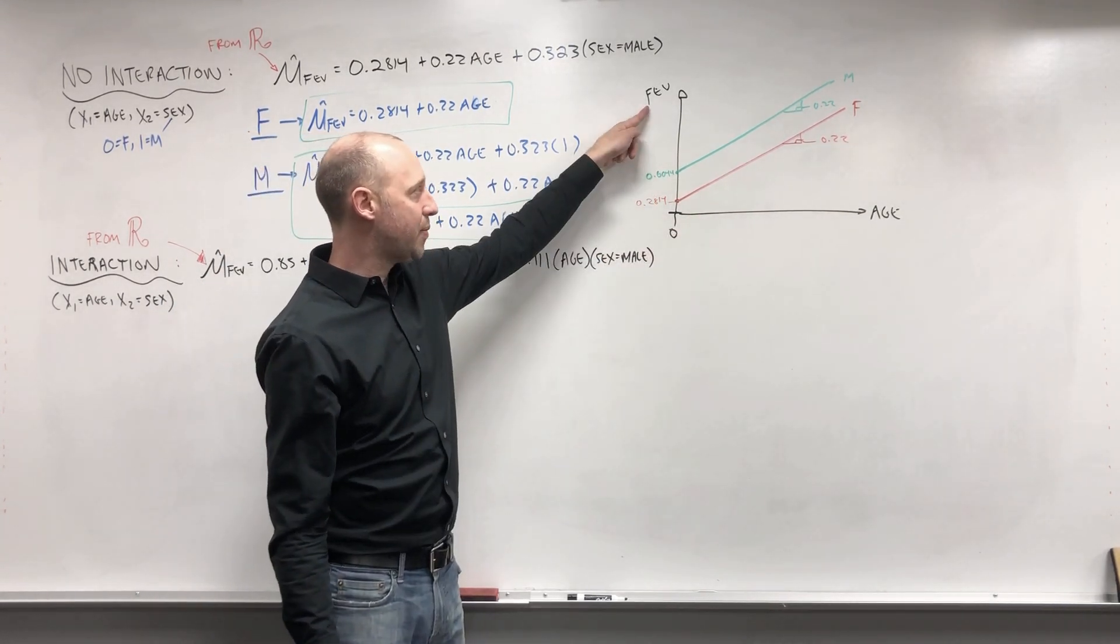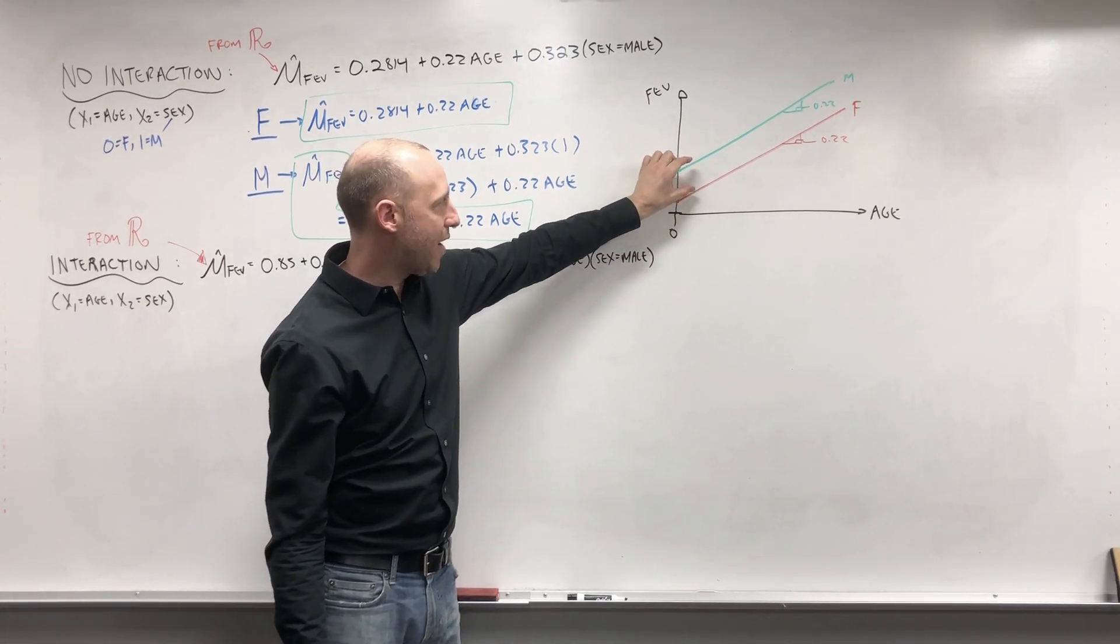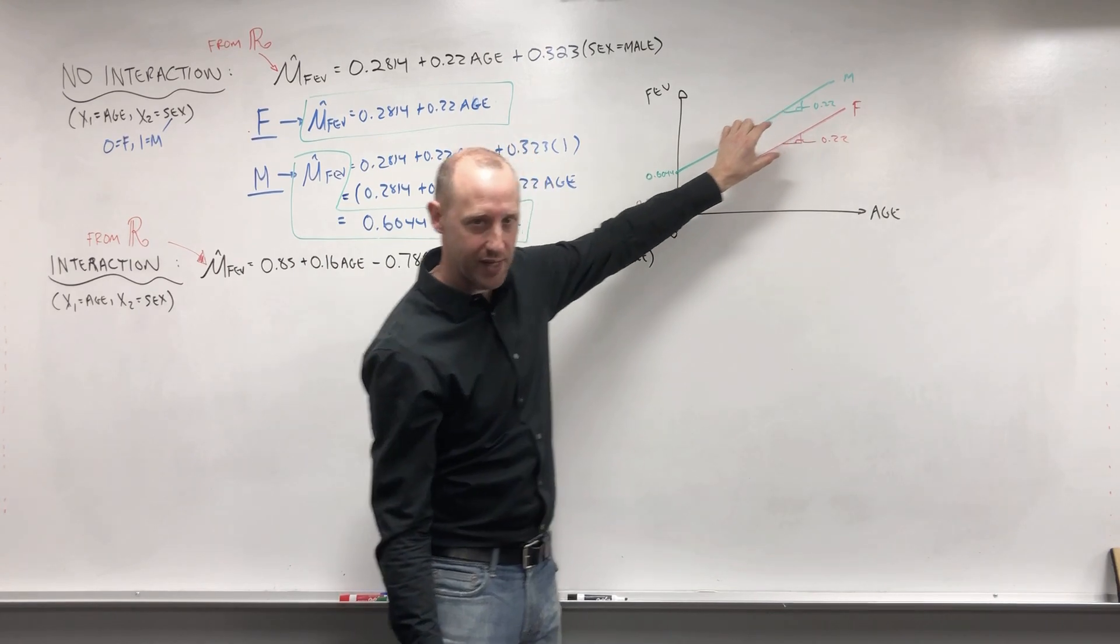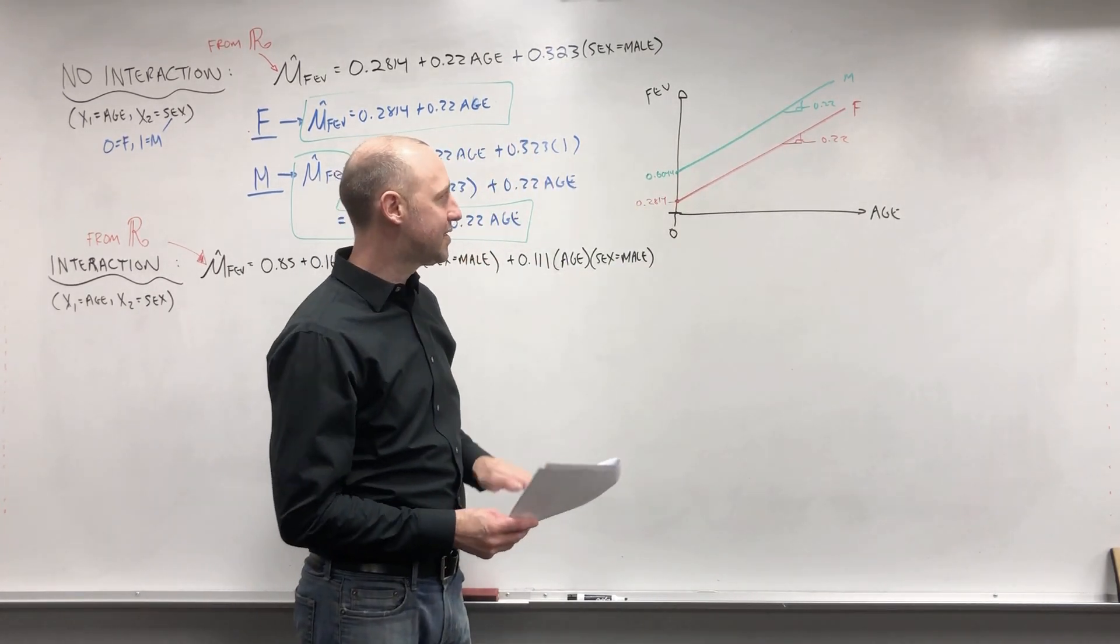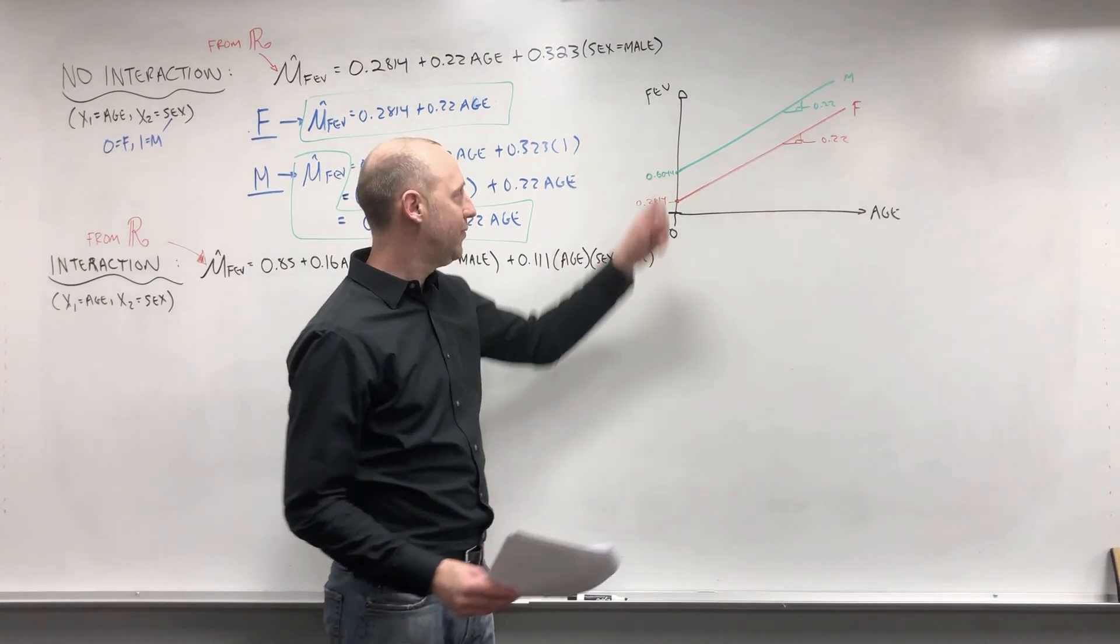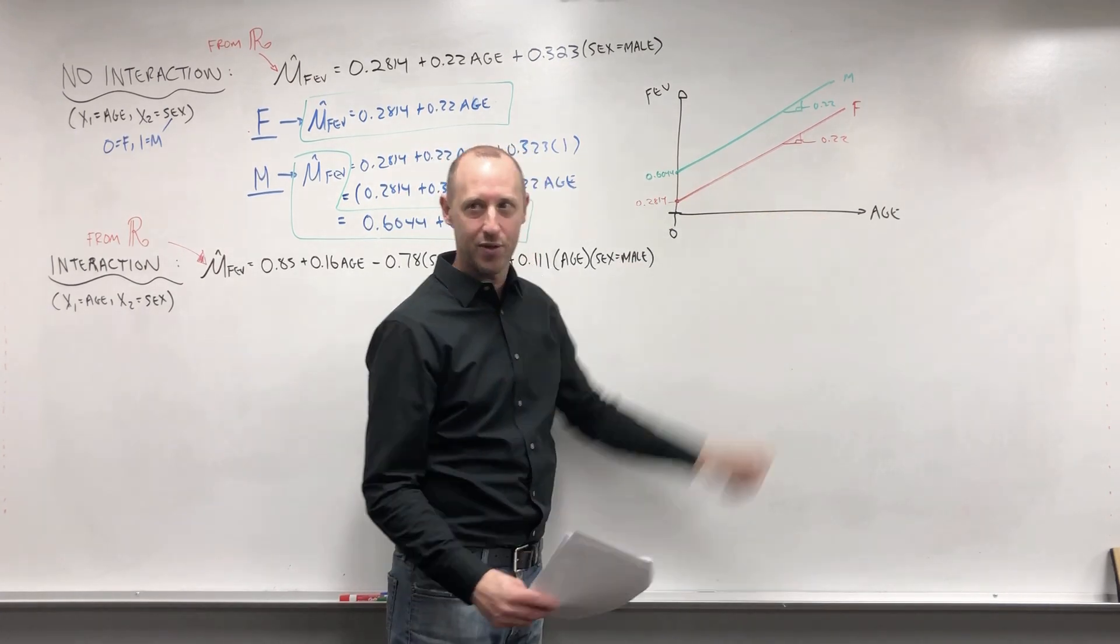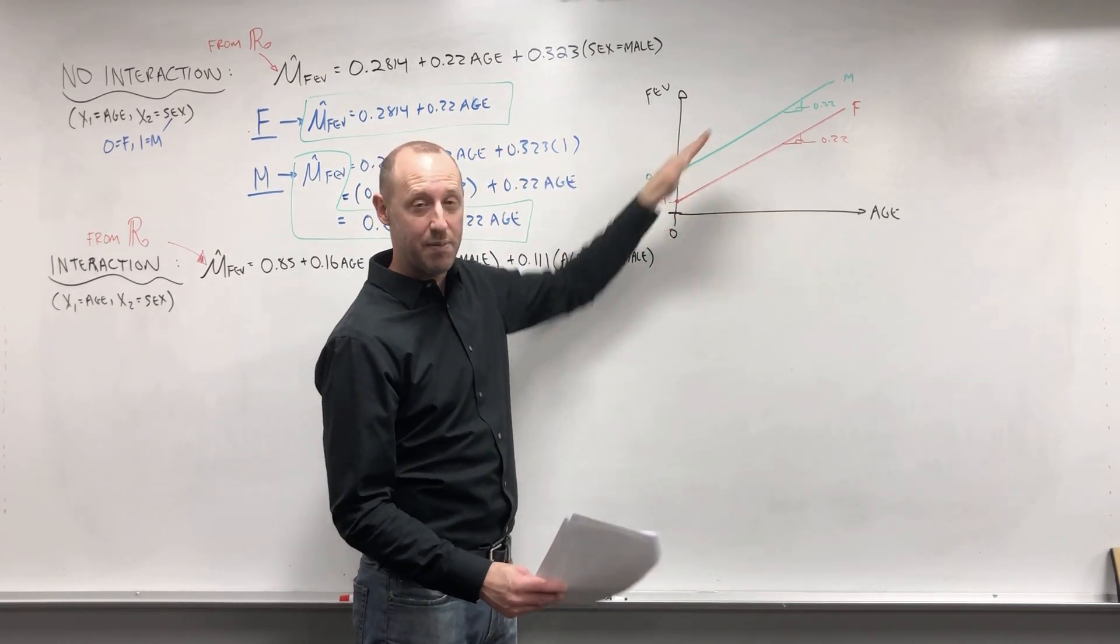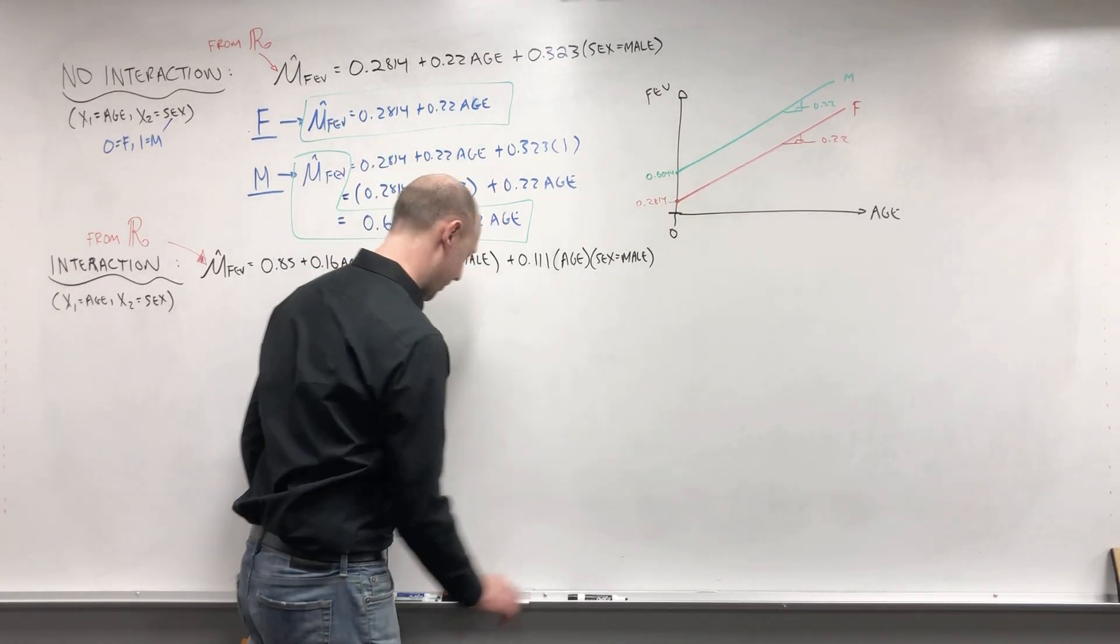So what we're saying here is the lung capacity of males tends to be higher than females, but the amount that is higher is the same for every age. So this model would suggest that the rate that males and females' bodies grow at is roughly the same. Their lung capacity increases the same amount as age goes up, but males' bodies tend to be bigger and they tend to stay bigger by the same amount or their lungs are bigger by the same amount.